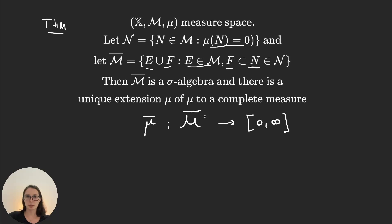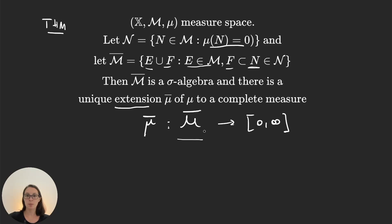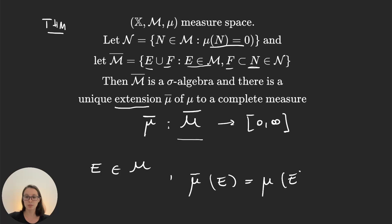This theorem is great because it tells us: whenever you have a measure that you cannot work with because you don't know if it's complete or not, you can just extend your sigma algebra to a larger one, M̄, and define a new measure there. What's important is that mu bar is an extension of mu. So if E is already an element in the sigma algebra M, then mu bar of E equals the original measure mu of E — you don't lose the measures of the sets you already could measure.